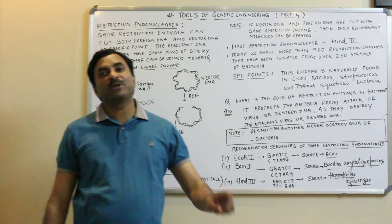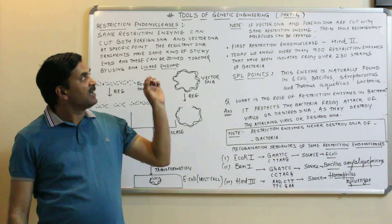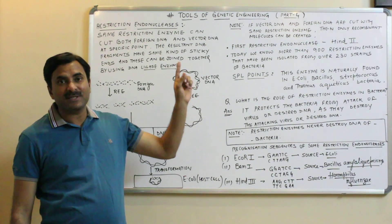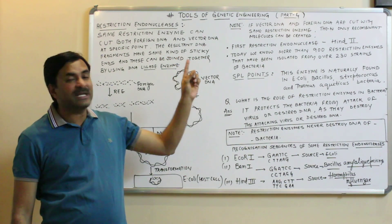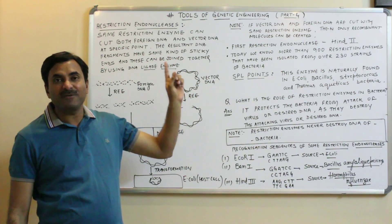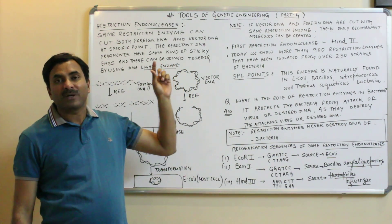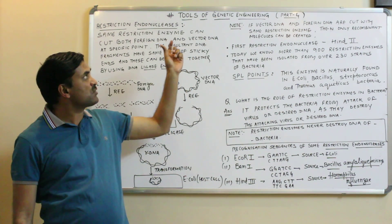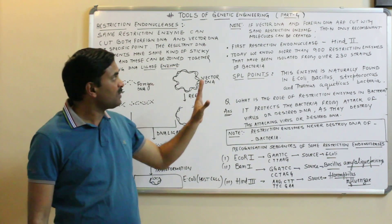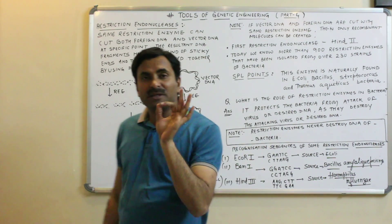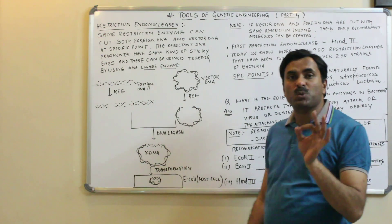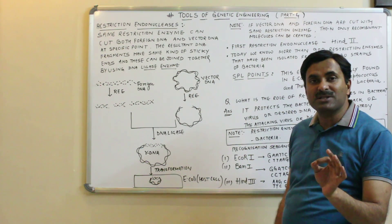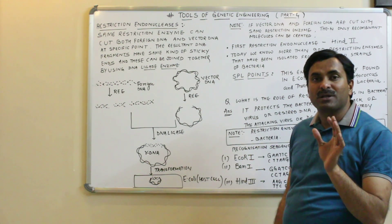Hello to all. Today we are going to discuss about the restriction endonuclease enzyme. This is Part 4 of the tools of genetic engineering series. In the previous video we discussed about the restriction endonuclease enzyme, and we are continuing with the remaining part today. We know very well that this enzyme is a very important tool used in genetic engineering — without this enzyme we cannot think of biotechnology or recombinant DNA technology.